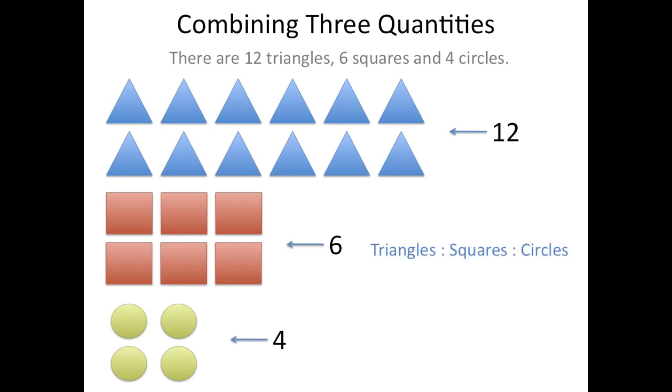And if I were to write this as a ratio triangles to squares to circles, the ratio would be 12 to 6 to 4. So you can see that it's very similar to comparing two quantities and showing it as a ratio. Now we're just adding in another quantity. But again we need to make sure that they're in the correct order. So if it says triangles to squares to circles I have to make sure that I list my quantities in that order.